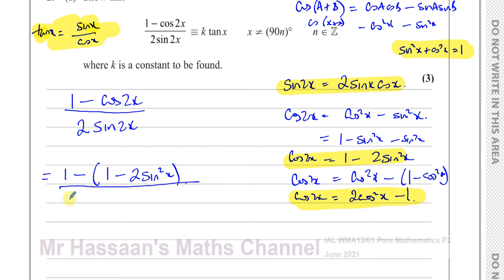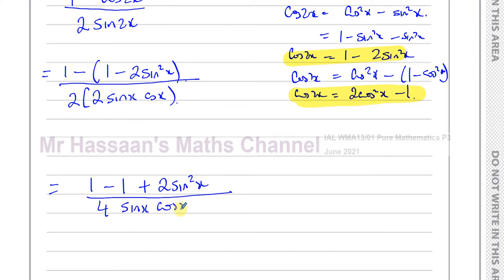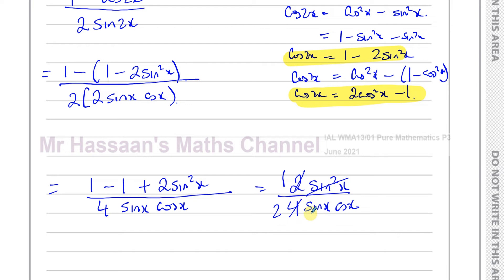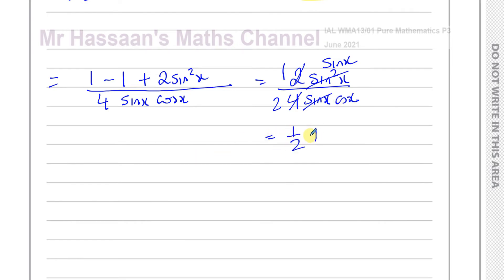So the expression becomes: 1 minus (1 minus 2 sine squared x) all over 4 sine x cosine x. Expanding the numerator: 1 − 1 + 2 sine squared x over 4 sine x cosine x. The 1 and −1 cancel, leaving 2 sine squared x over 4 sine x cosine x. The 2 cancels with 4 to give 2, and one factor of sine cancels, leaving sine x over 2 cosine x, which is one half of sine x over cosine x, giving one half tan x.